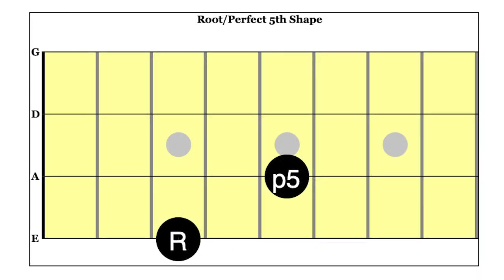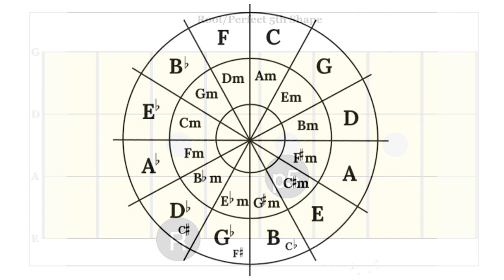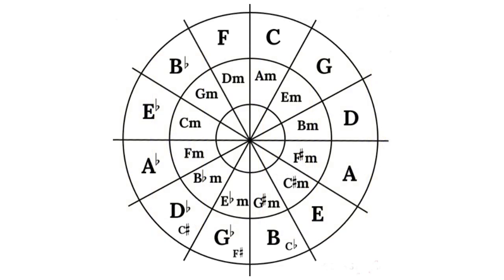A fifth looks like this on a bass fretboard. If we continue round the circle next we have D and D is a fifth above G. So you get the idea as we move clockwise round the circle we go up a fifth with each letter.